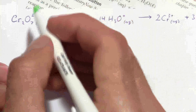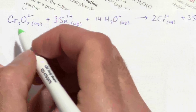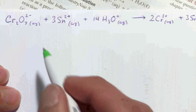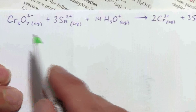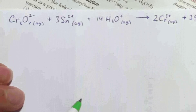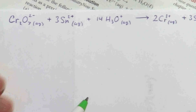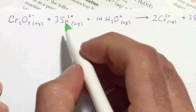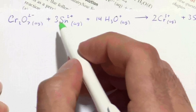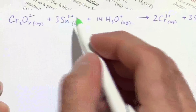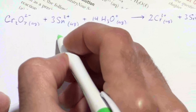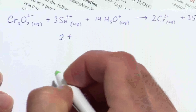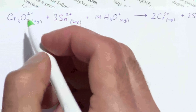We're going to look at this problem element by element and find out what the oxidation numbers are for each element. We'll start off with the obvious one: tin is all by itself, so the oxidation number is just its charge — its oxidation number is positive two.